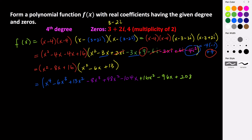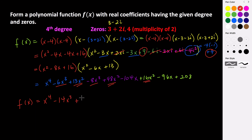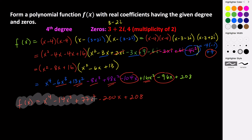Now combining all like terms: we have only one x to the fourth term. The x cubed terms: negative 6x cubed and negative 8x cubed give negative 14x cubed. The x squared terms: 13, 48, and 16 combine to give positive 77x squared. The linear terms: negative 104x and negative 96x give negative 200x. And the constant term is plus 208. So our final polynomial function is x to the fourth minus 14x cubed plus 77x squared minus 200x plus 208.